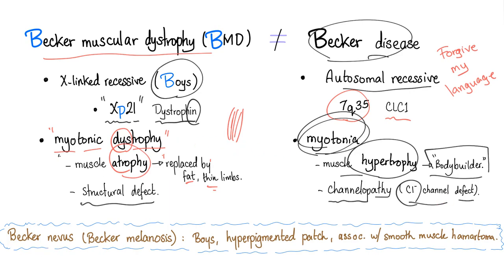Becker nevus, or Becker melanosis, is the third disease. It affects boys, presents with hyperpigmented patches, and is associated with smooth muscle hamartoma. Hamartoma is not cancer.